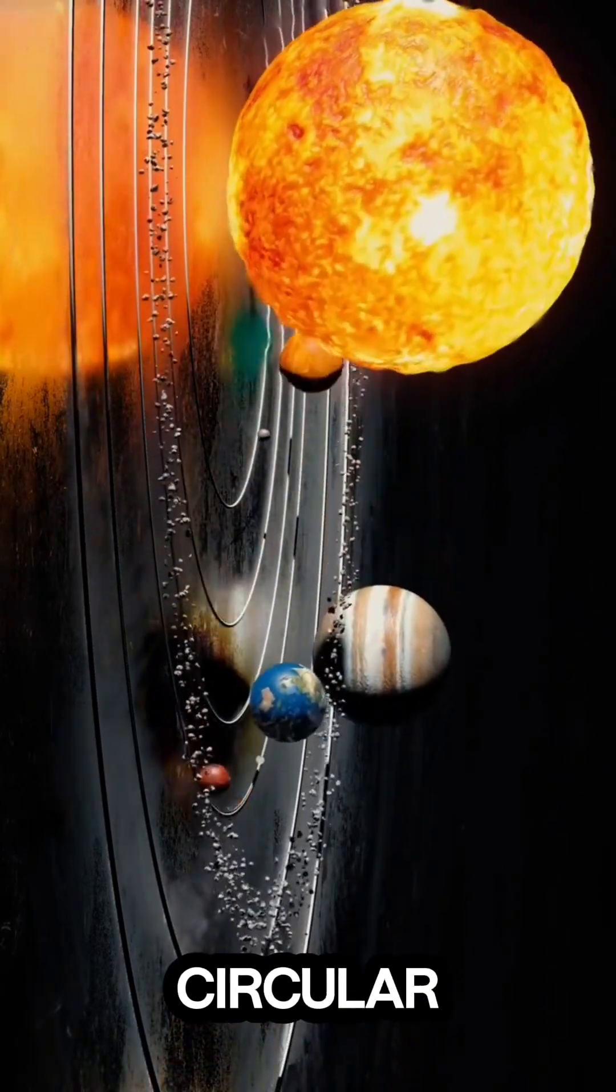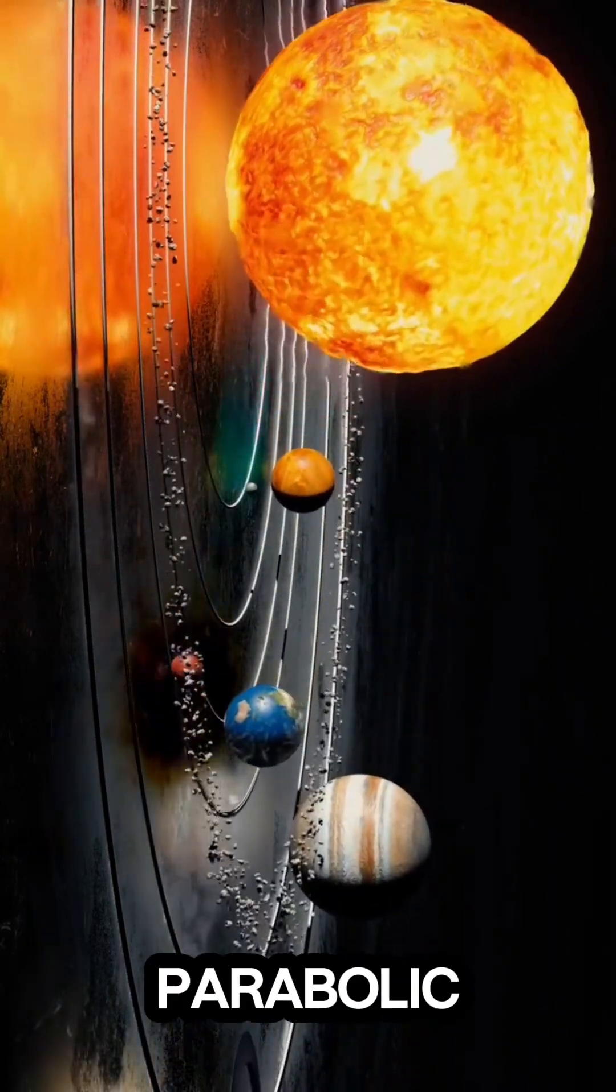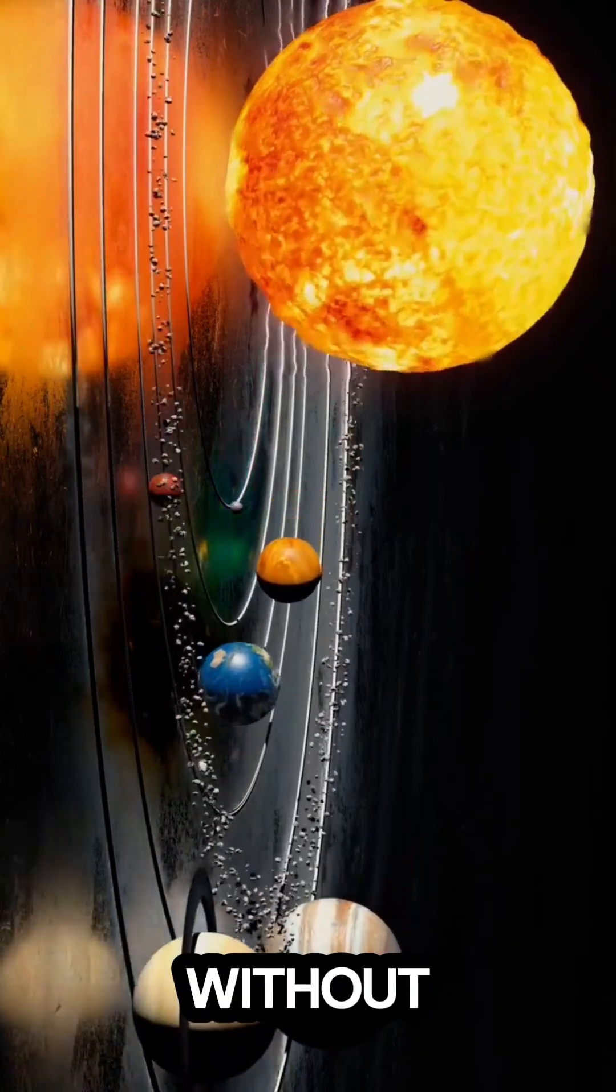Orbits can be circular, elliptical, or even parabolic for objects that pass by without being captured.